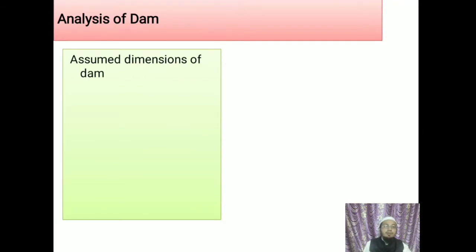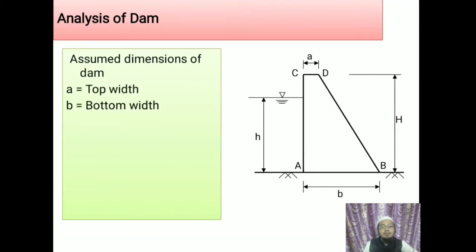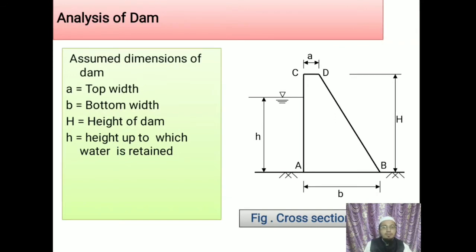Let us analyze the dam. We assume a dimension of the dam as seen in the figure — a diagrammatic view of a dam of trapezoidal section. The top width of the dam equals small a, the bottom width is small b, the height of the dam structure is capital H, and the height of the water to be stored will be small h.